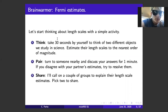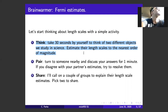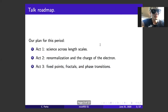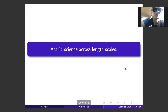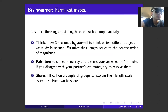Let's start with some general comments on science across length scales, broadly speaking. To warm up a little bit, I'll ask you to think and come up with two different objects that we study in science and try to estimate the size of those objects to within the nearest order of magnitude. For instance, one example would be something like the earth — the earth is something like six times 10 to the six meters. Can you think of two different objects we study in science that differ by a large number of orders of magnitude?